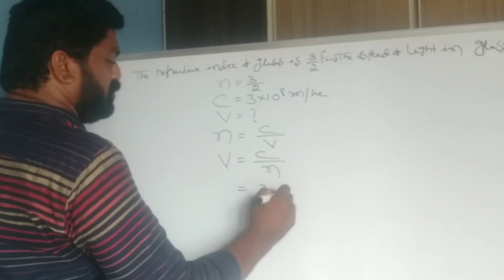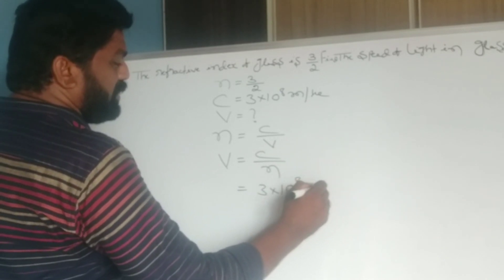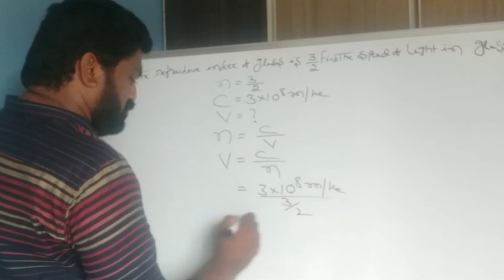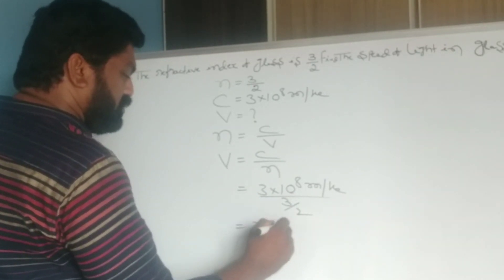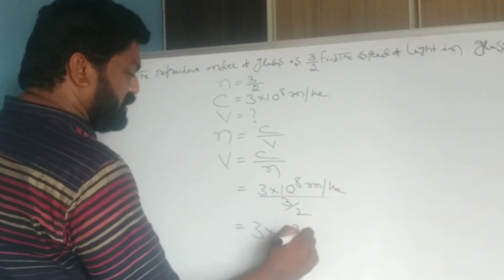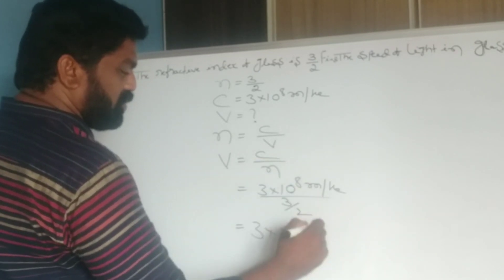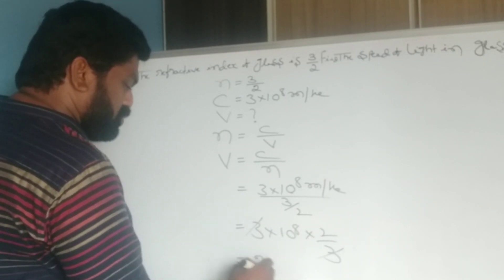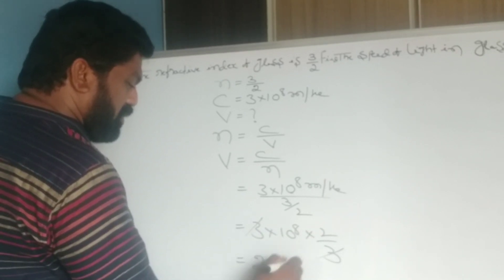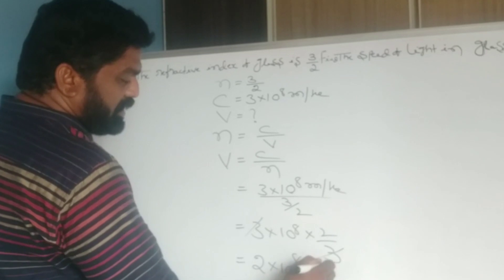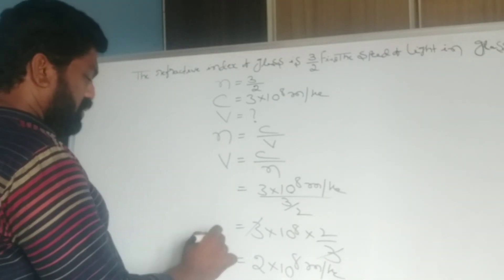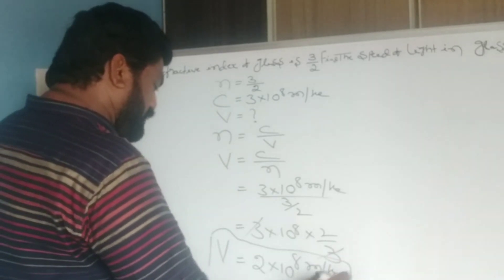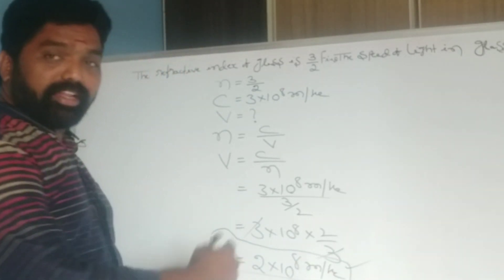So V = (3 × 10⁸) / (3/2), which is written as 3 × 10⁸ × (2/3). The 3s cancel, giving 2 × 10⁸ meters per second. The speed of light in glass is 2 × 10⁸ meters per second.